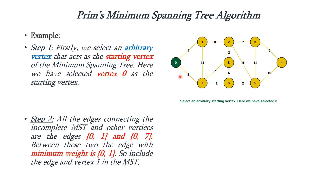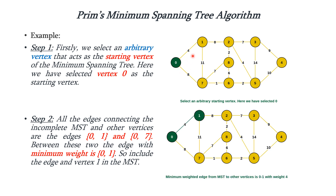Next we have to choose the adjacent vertices of the starting vertex which are not included in the MST yet. The possible vertices which can be included along with 0 are 1 and 7. Among these 2 vertices, the one with the minimum weight is included. Between 4 and 8, 4 is least, so we are including edge 0 to 1 into the MST. Once it is included we are changing the color of the vertex and the edge.